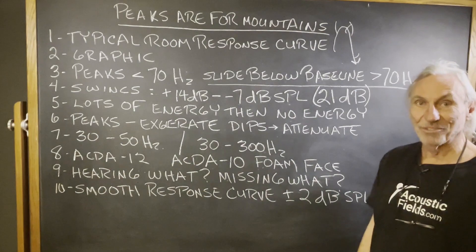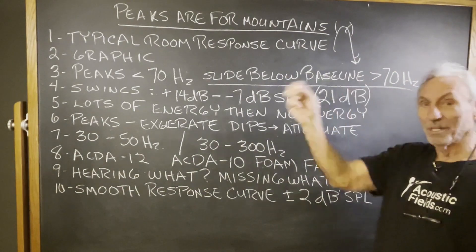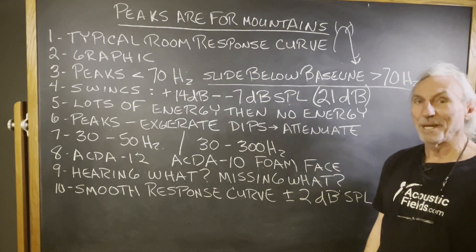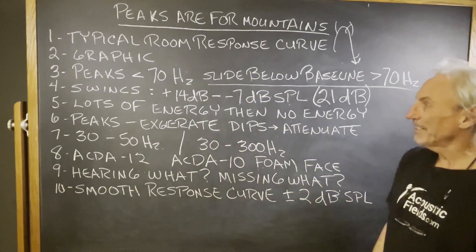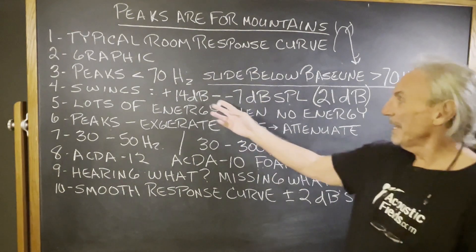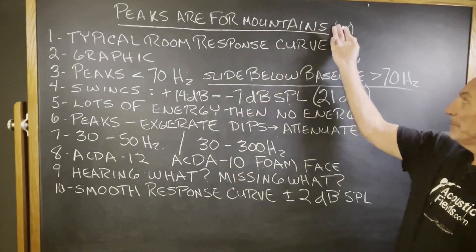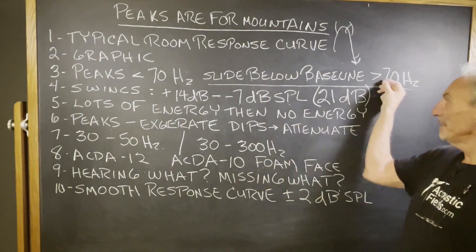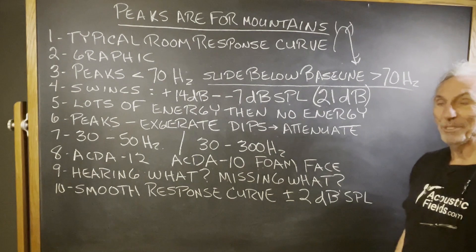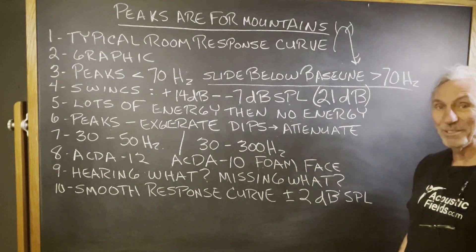Too much energy, not enough energy — and in the time domain, not good. We can't have 14 dB peaks and minus 7 dB swings at 70 cycles, which is usually the case in most of these small rooms — a 21 dB difference.